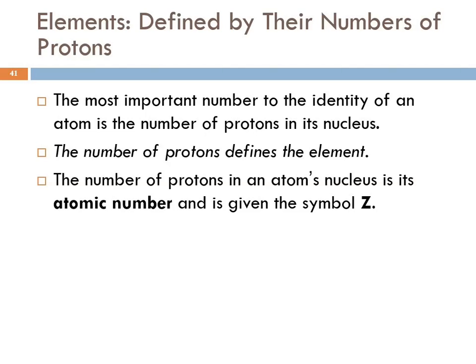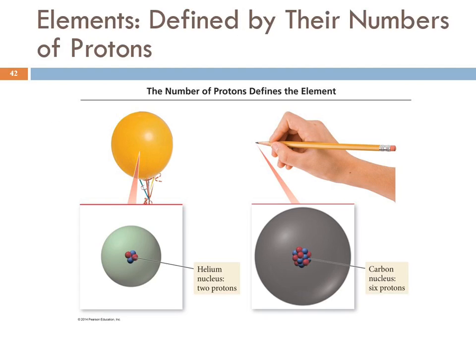Elements are defined by their number of protons. How do we identify what element this atom is? It's the number of protons. The number of protons in the atom's nucleus is called its atomic number, and it's given the symbol Z. If we look at a helium nucleus, inside the helium nucleus there are two protons. All helium atoms have two protons in their nuclei. If we look at a carbon atom, here's the carbon nucleus. It has six protons. All carbon atoms have six protons. This is the identifying feature of an atom - the number of protons. We call that the atomic number.